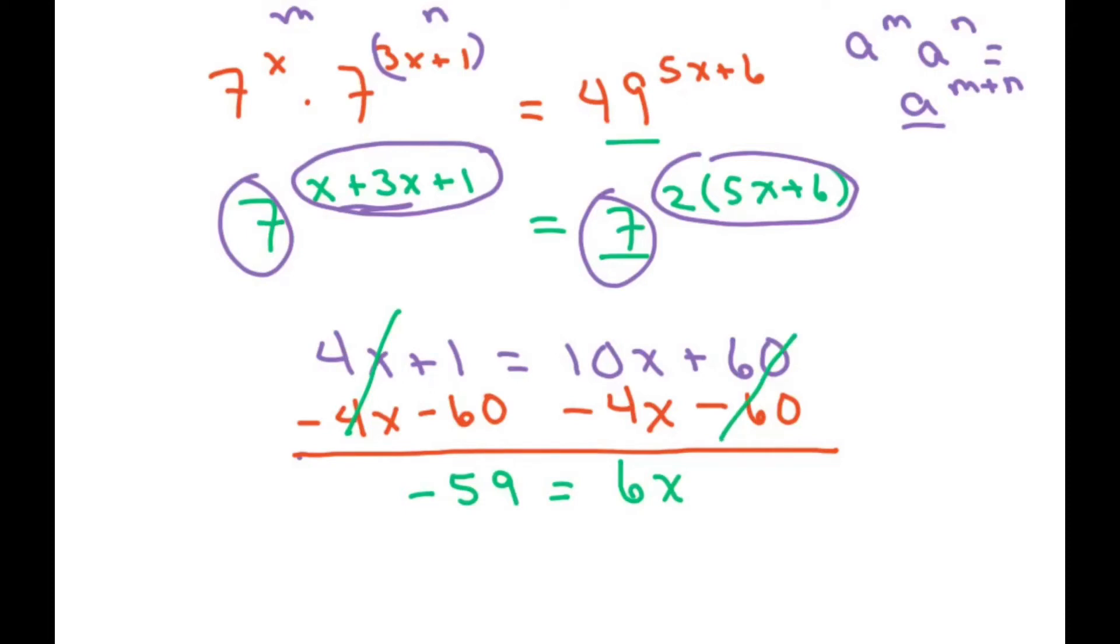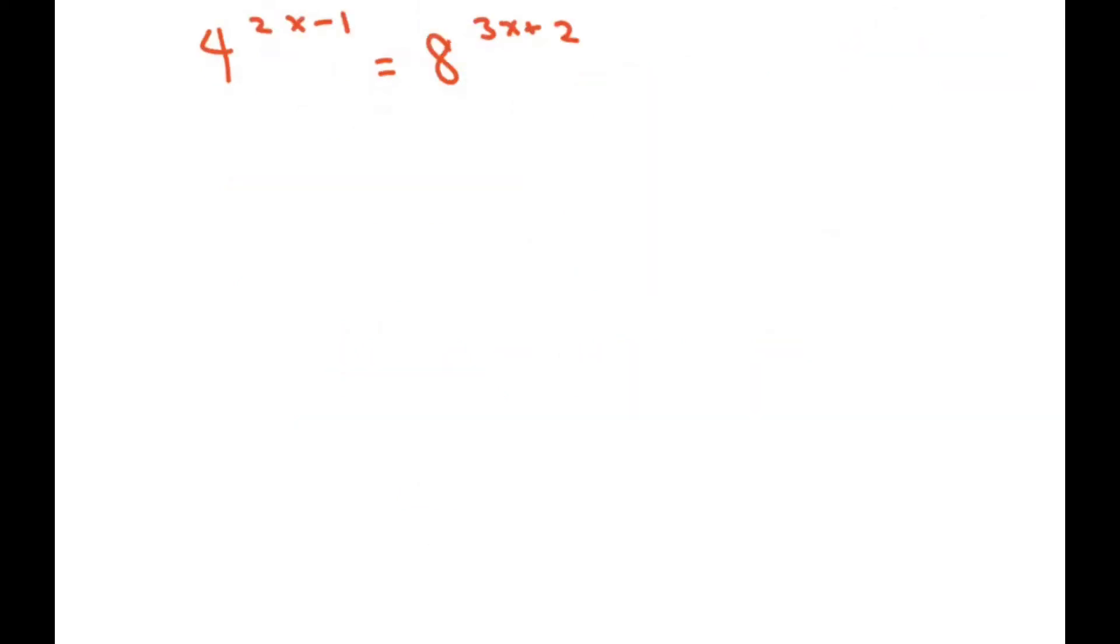Okay, so then you just divide both sides by 6. So you get x equals negative 59 over 6. Okay, the next one is this one.